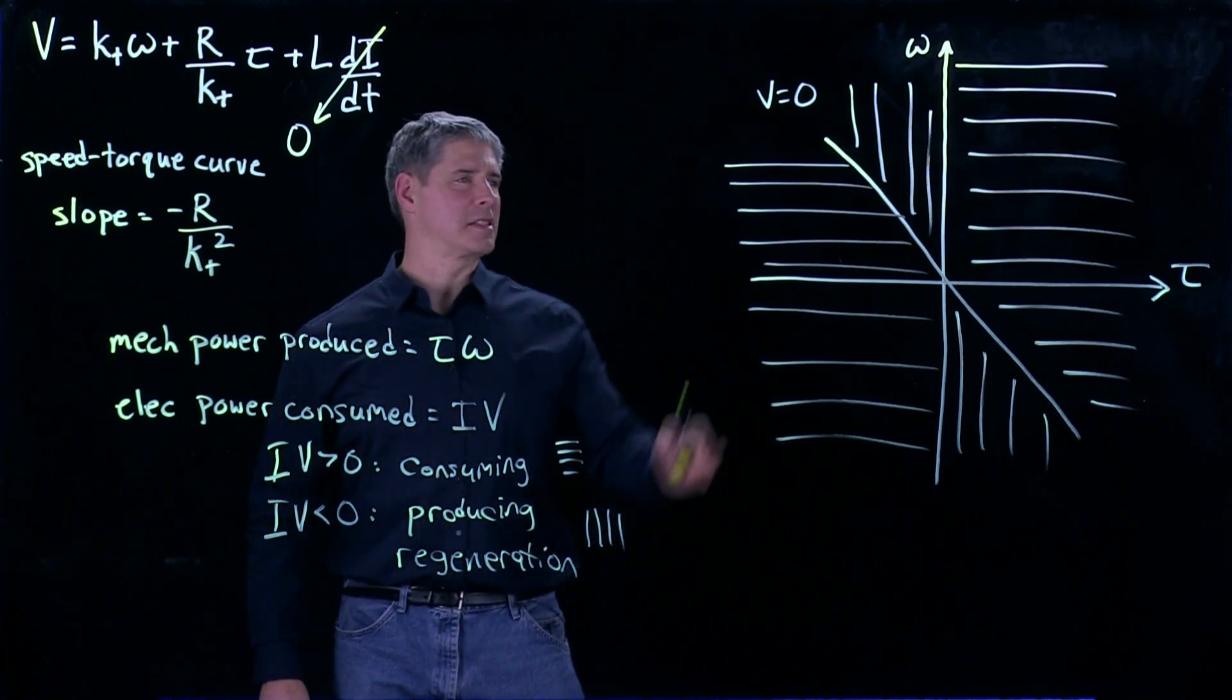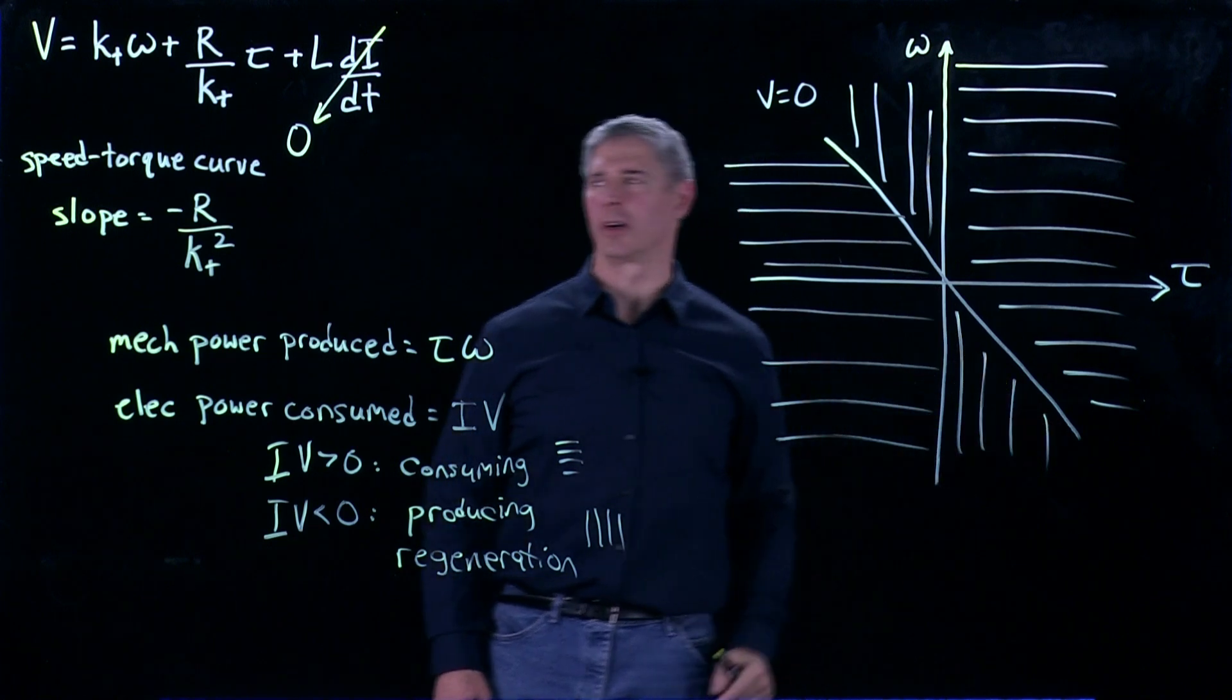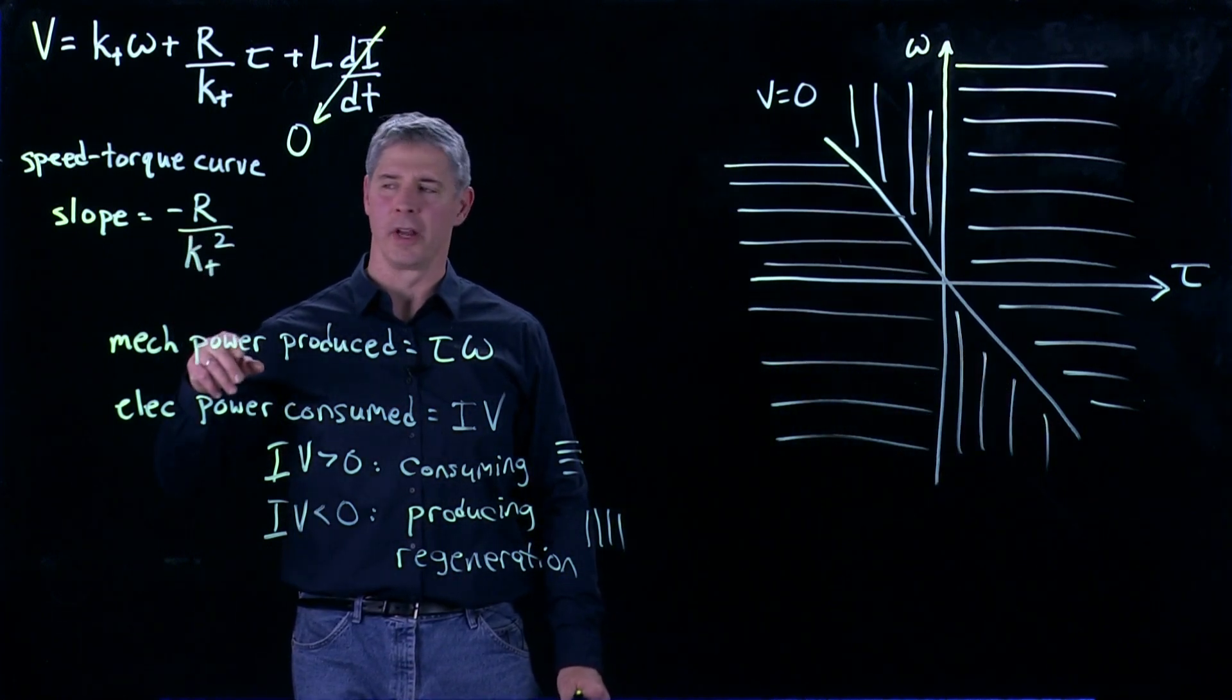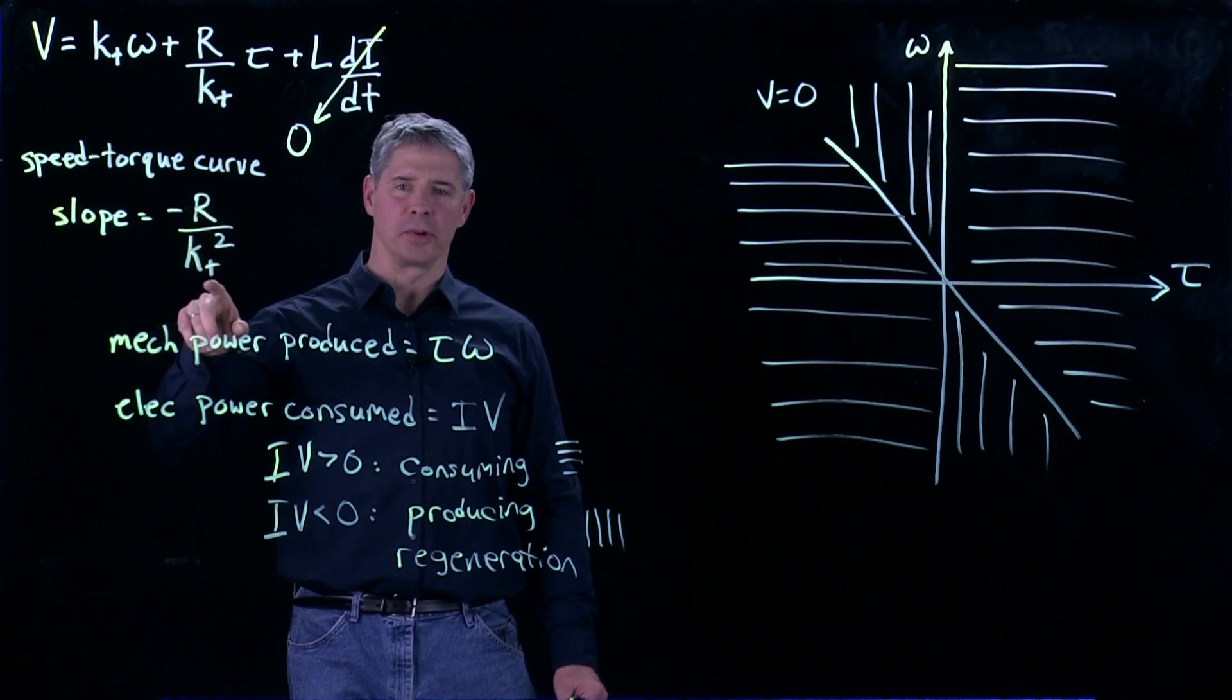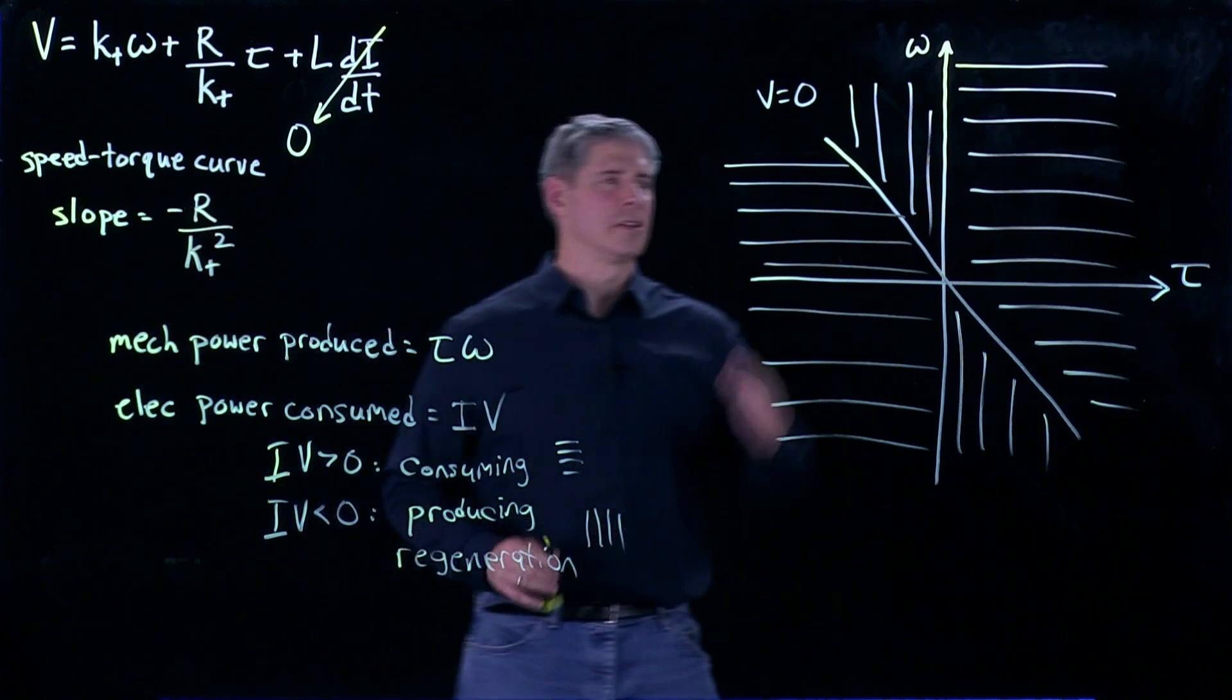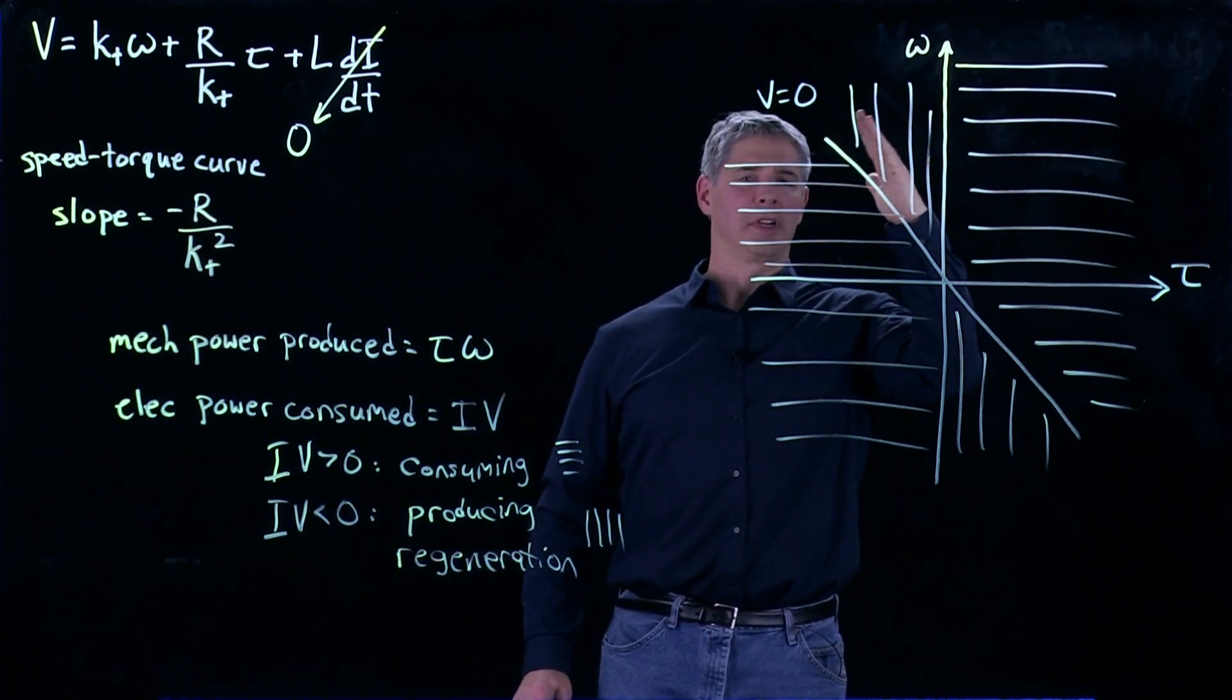Now, this slope of the speed-torque curve is just given by minus R over kT squared. So if R increases, or kT decreases, the slope is going to get larger, become more vertical.